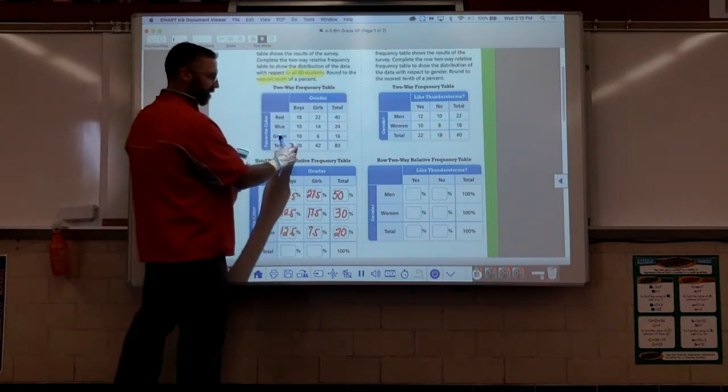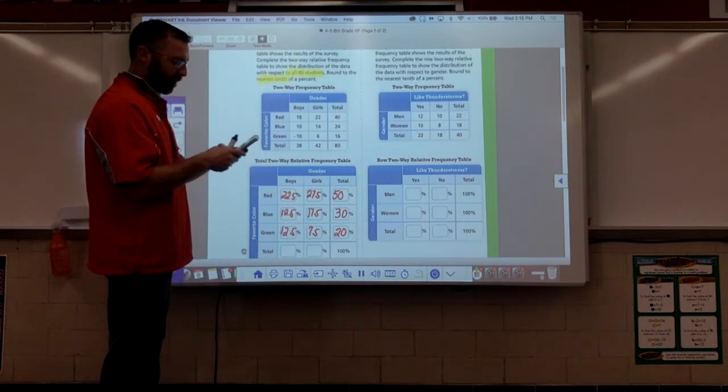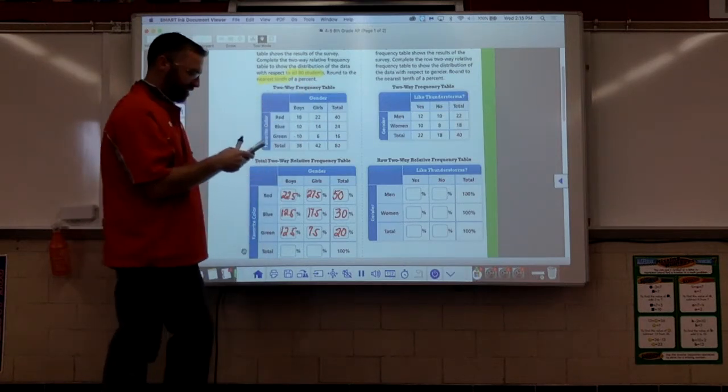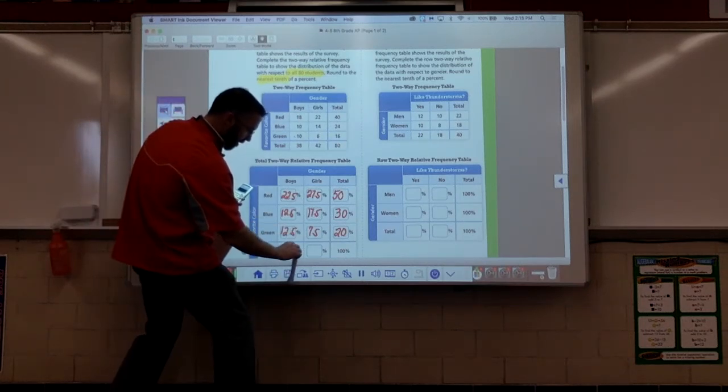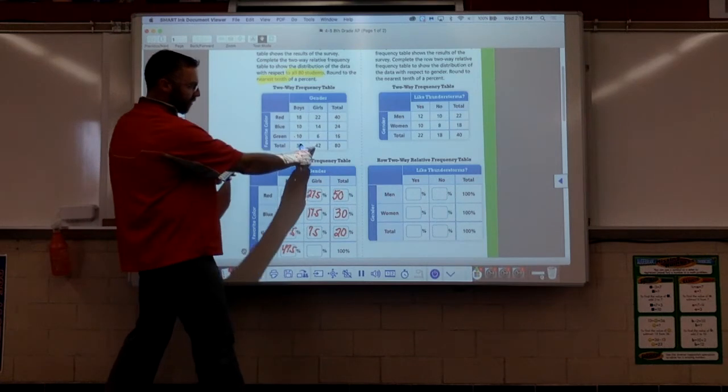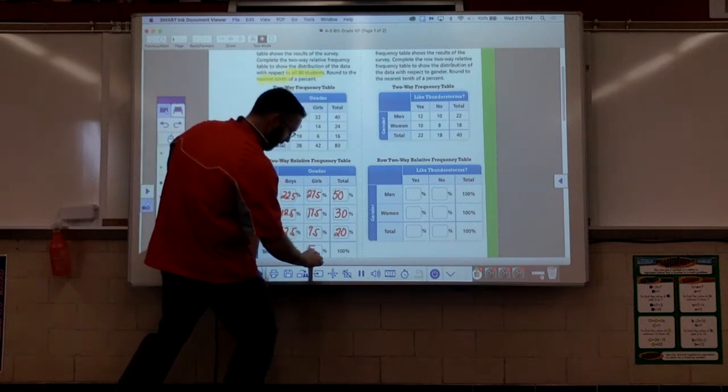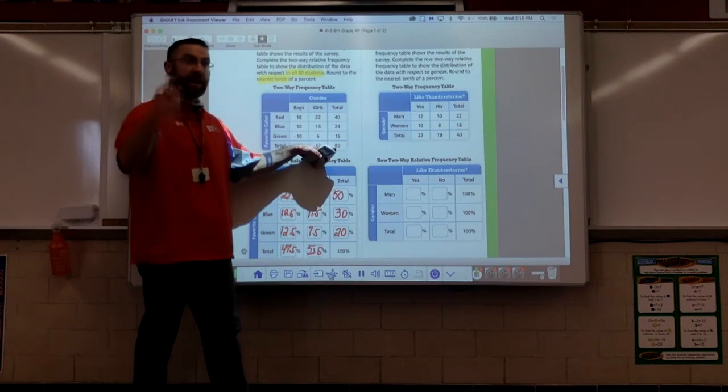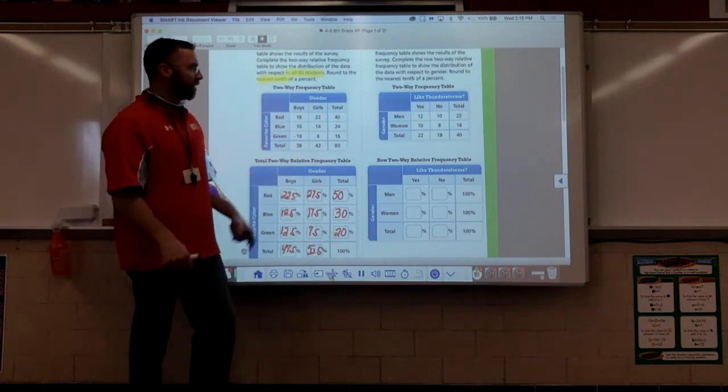Going down to the next one, it's a total, 38 divided by 80. Boy, it sounds like we're doing the same thing, but we are always dividing by 80 because we are comparing it to all 80 students. This, 47 and a half. This next one, 42 divided by 80 times 100, this comes out to be 52 and a half. And folks, this is 100% because we are comparing 80 kids to 80 kids. 80 divided by 80 is 1, 1 times 100 is 100.